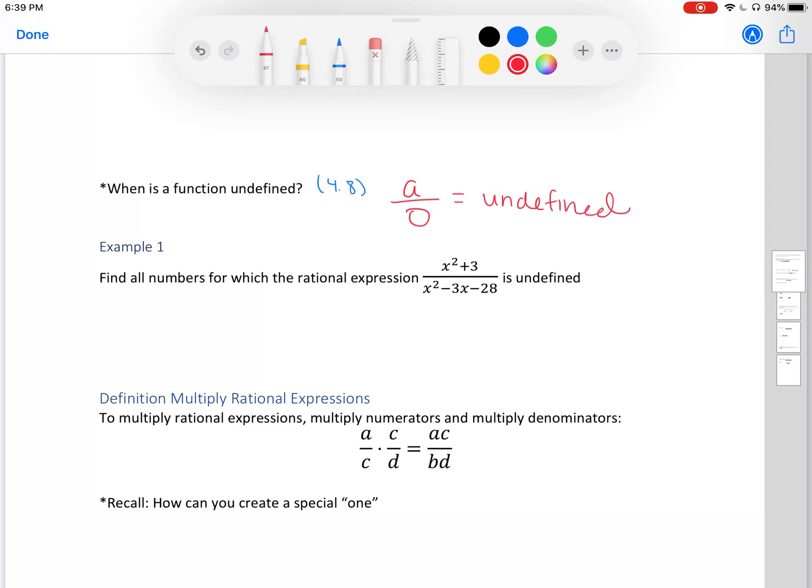So example 1. Find all numbers for which the rational expression x squared plus 3 divided by x squared minus 3x minus 28 is undefined. So recall from last section, we want to take our denominator and set it equal to 0 and solve.